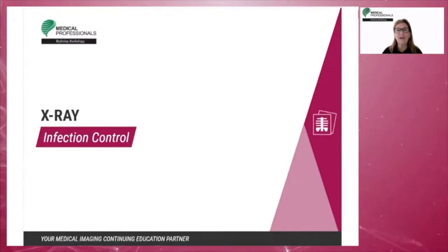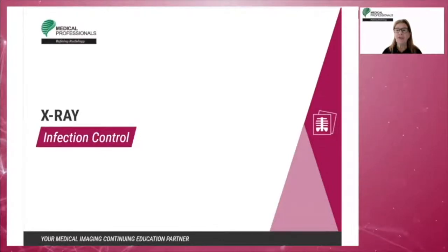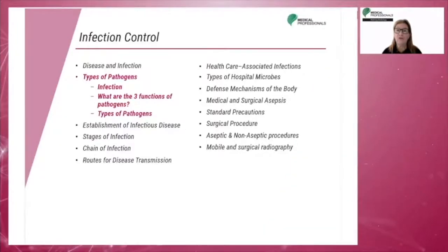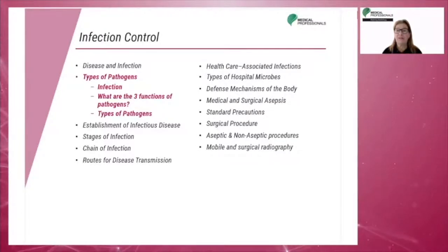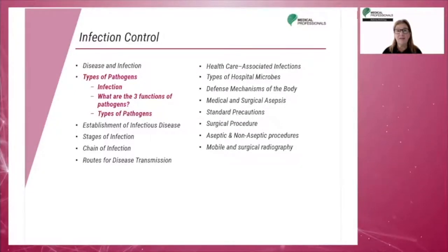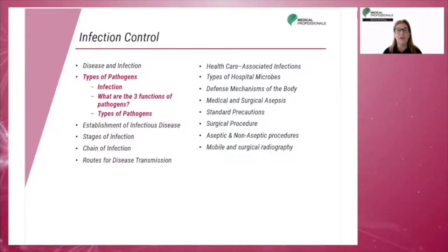An infection will occur when microorganisms establish and grow in a host, resulting in injury to that host. These microorganisms are pathogenic organisms. In this section, we will demonstrate the difference between the four different types of pathogens.